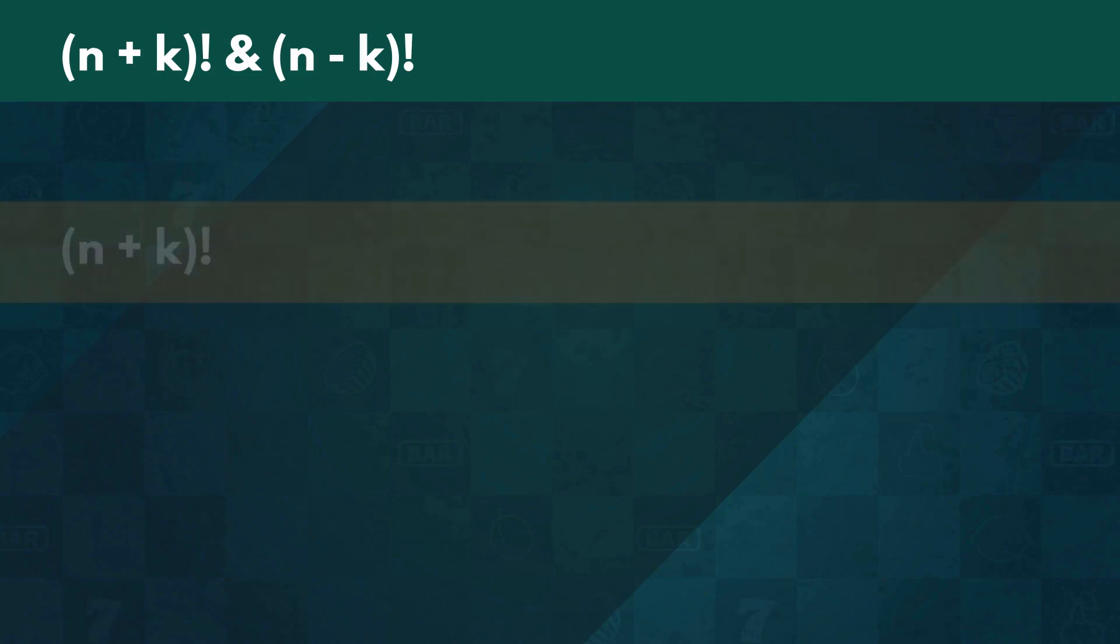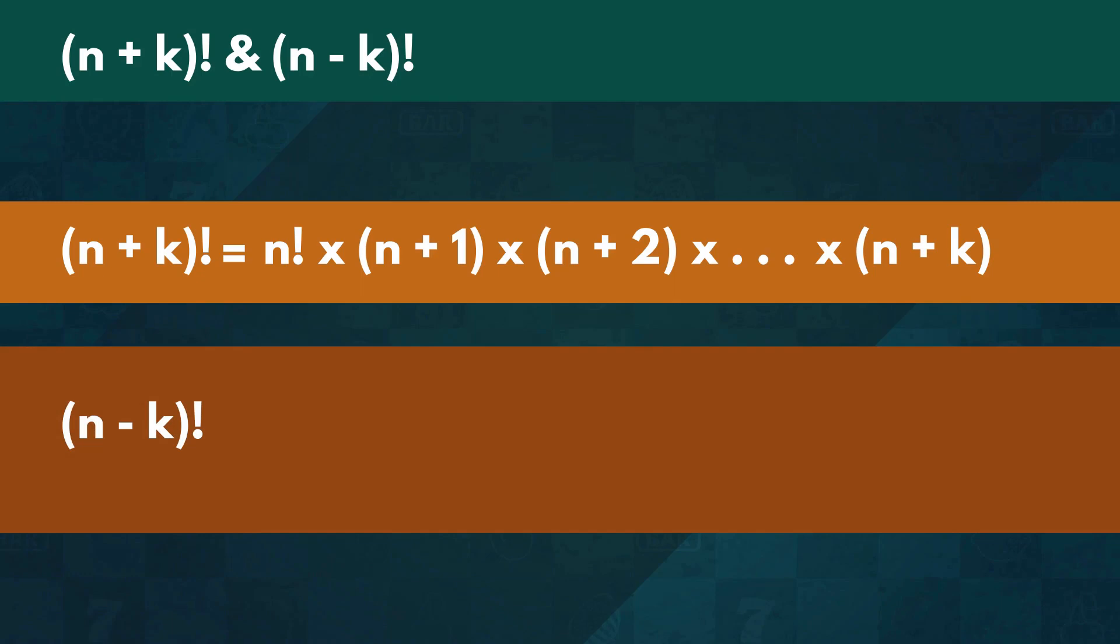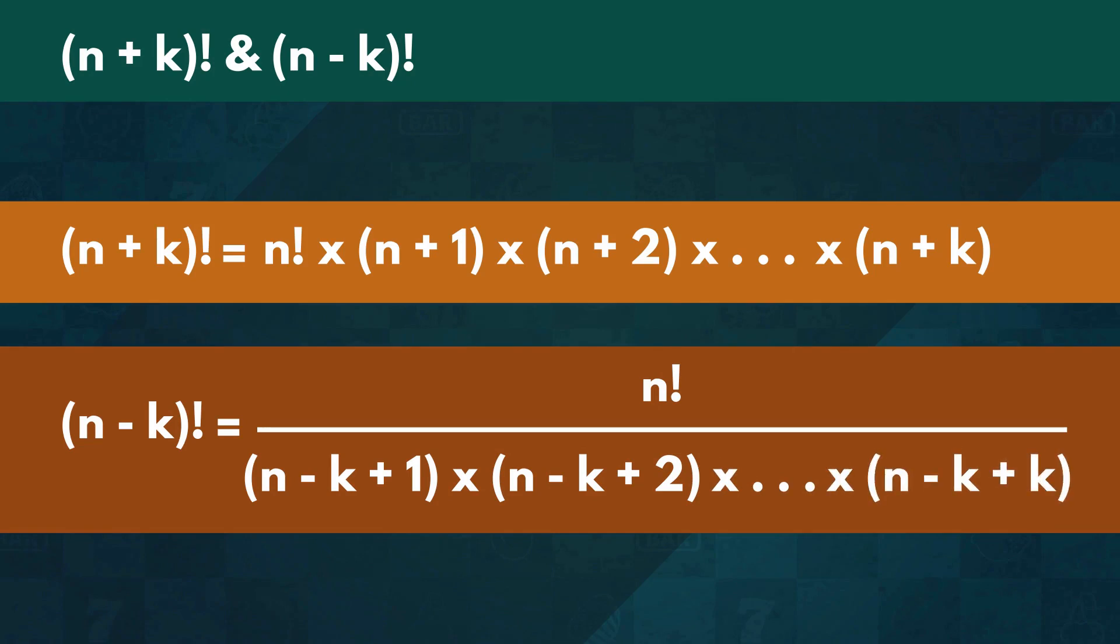In mathematical terms, this is equivalent to n plus k factorial equals n factorial times n plus 1 times n plus 2 and so on up to n plus k. Similarly, n minus k factorial equals n factorial times n minus k plus 2 all the way up to n minus k plus k, which equals n.